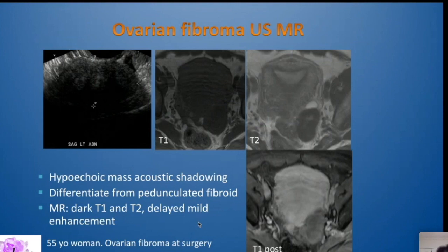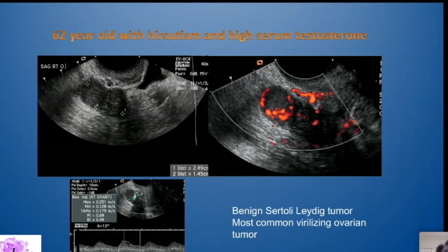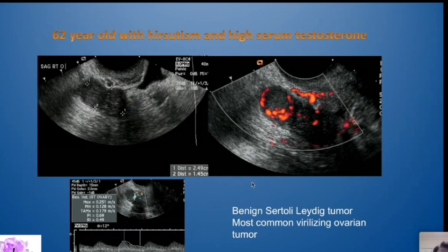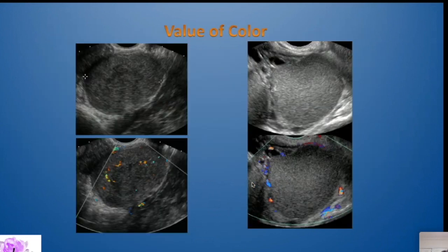When we can tell the gynecologist it is likely an ovarian fibroma, they may opt for laparoscopy rather than open laparotomy. Here is an interesting case: a 62-year-old woman with a history of hirsutism and high serum testosterone. Her right ovary had a very small but highly vascular lesion at the edge with low resistance flow. This turned out to be a benign Sertoli-Leydig cell tumor, which is the most common virilizing ovarian tumor.